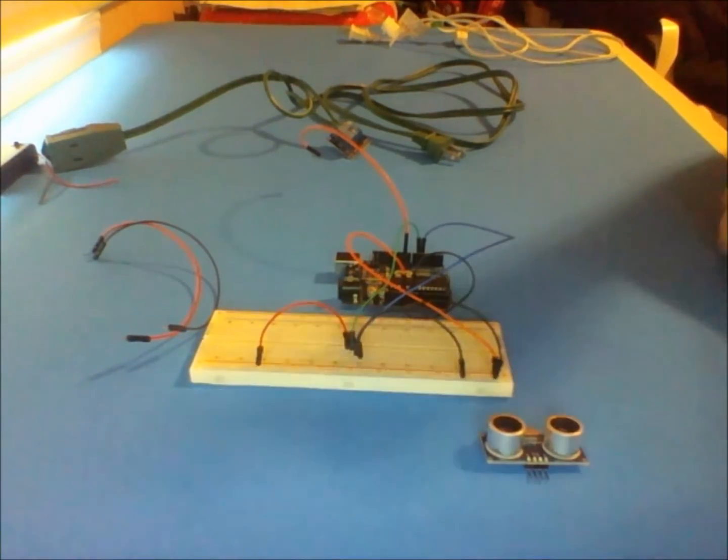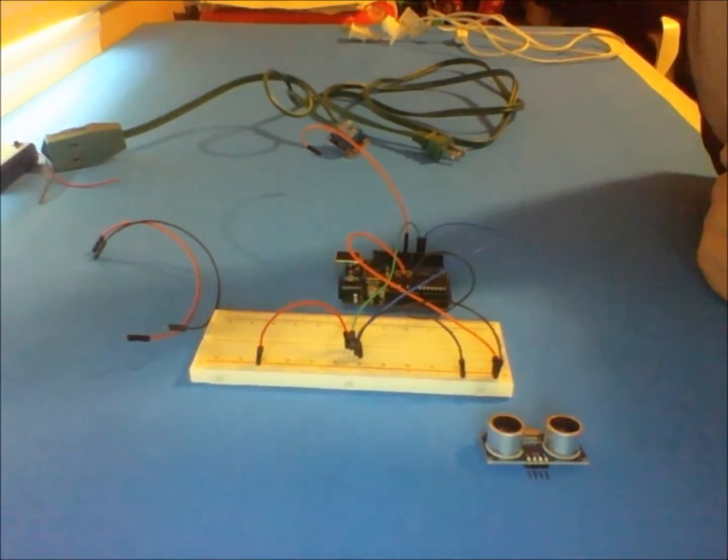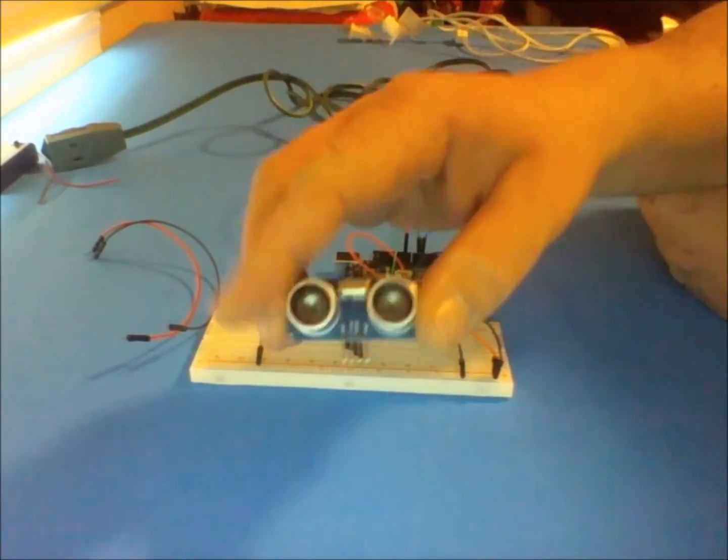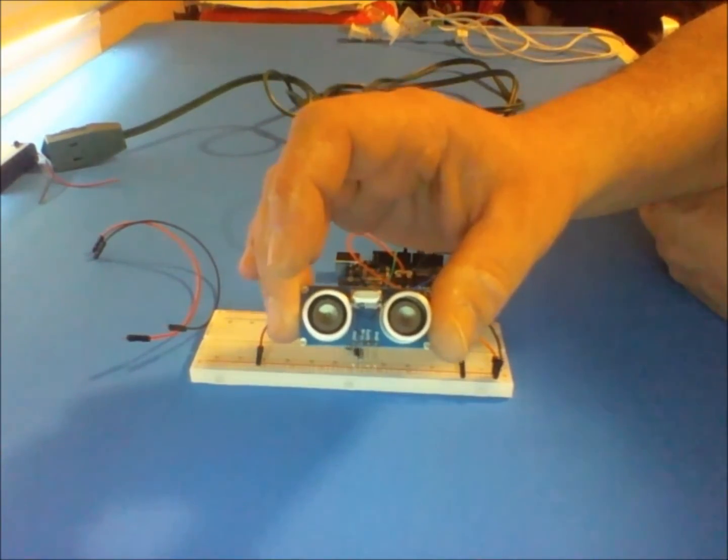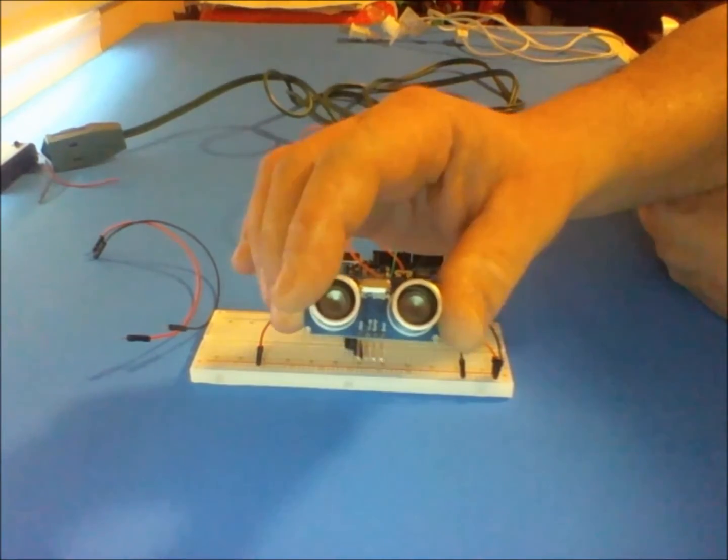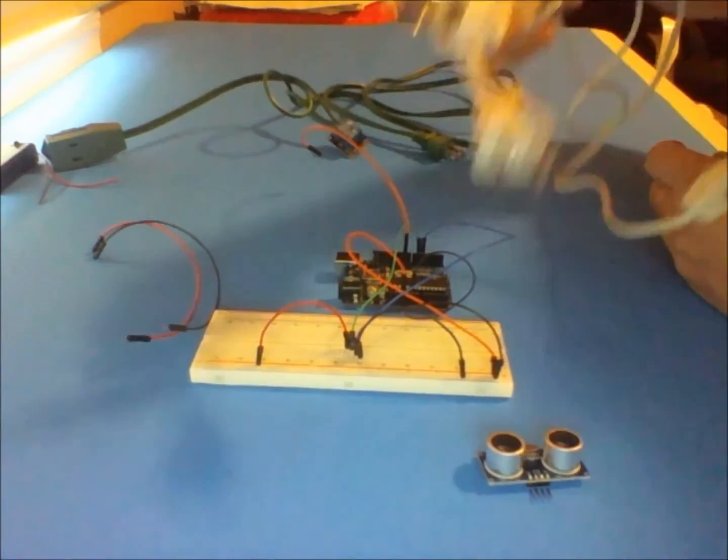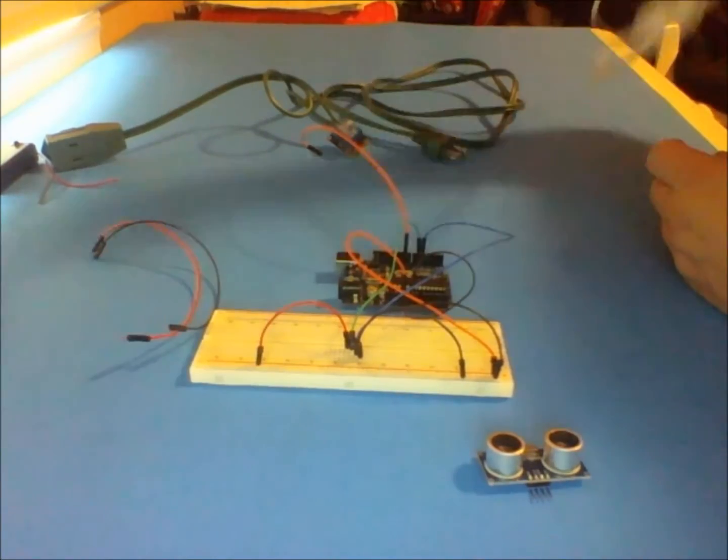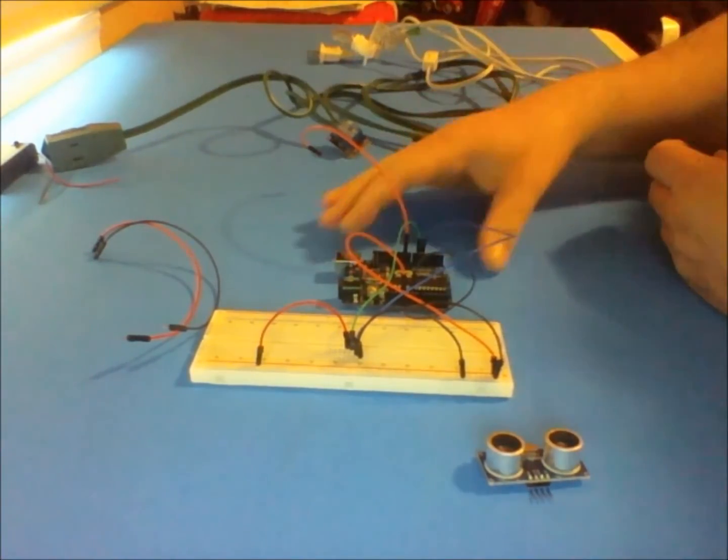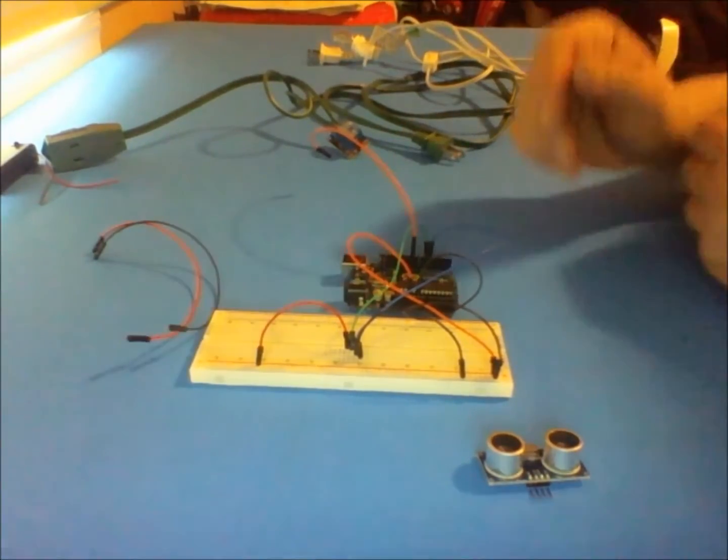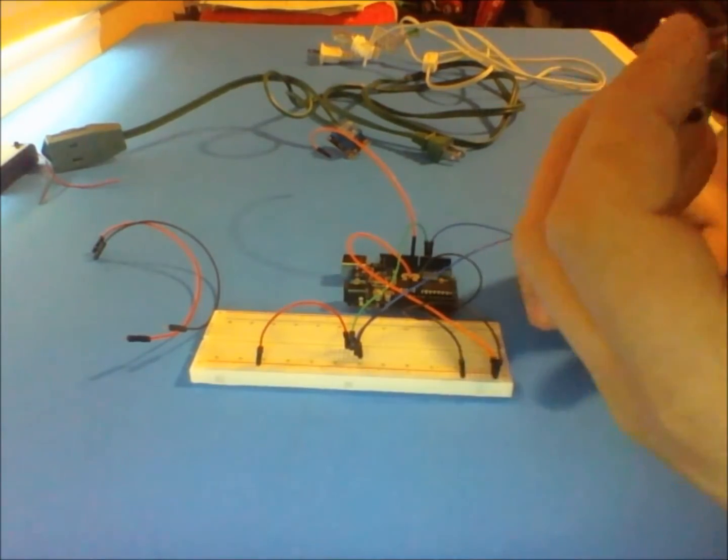Hey everyone, in this video I'm going to try to use an SR04 sonar detector to control a light bulb, making it turn on and off using an Arduino Uno.